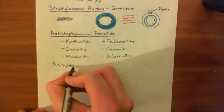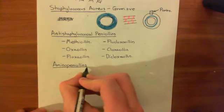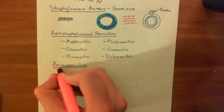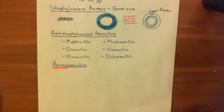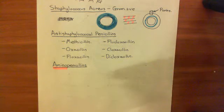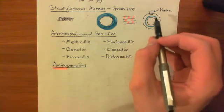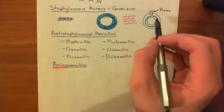Amino penicillins are penicillins where the R group of the penicillin molecule contains an amino group — which makes sense. This amino group helps the penicillin go through the porin of the outer membrane of gram-negative bacteria. It also has a very small R group to make it easier for the molecule to negotiate its way through the porin. These amino penicillins are better than the original penicillin at gaining access to the periplasmic space of gram-negative bacteria and therefore to the peptidoglycan transpeptidase in the cell wall.